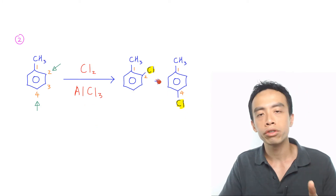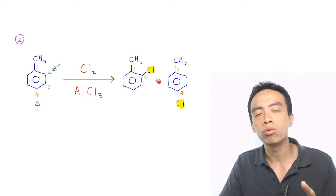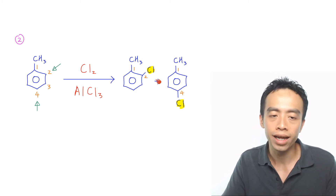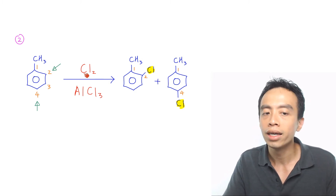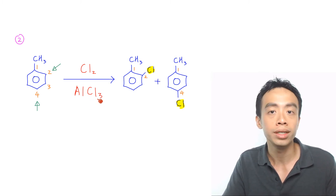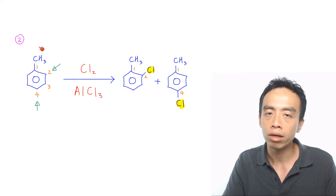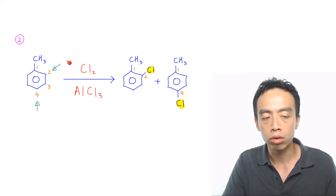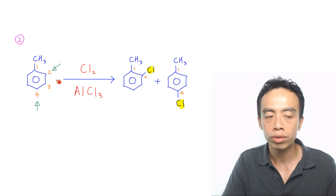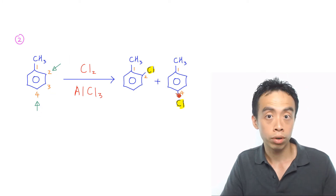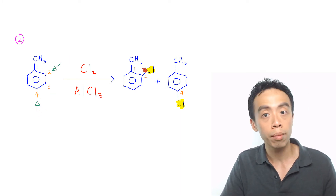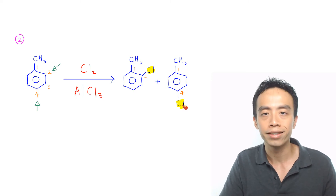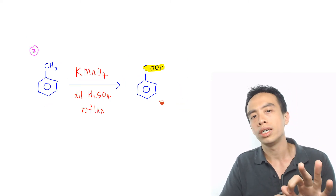The second must-know reaction of methyl benzene is the chlorination of methyl benzene. This is done using Cl2 with AlCl3 as catalyst. As with nitration, the methyl group is a 2,4-directing group, so it directs the chlorine to position 2 and position 4. The products formed are 2-chloromethylbenzene and 4-chloromethylbenzene.